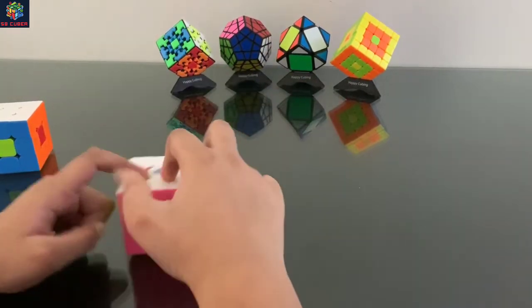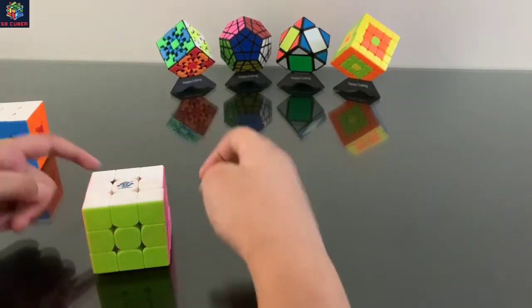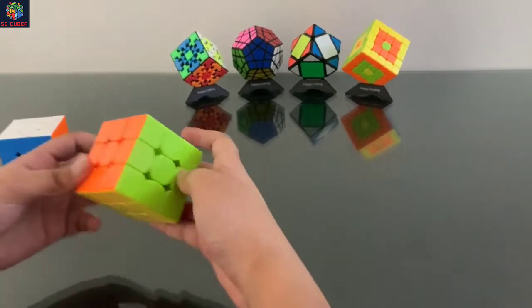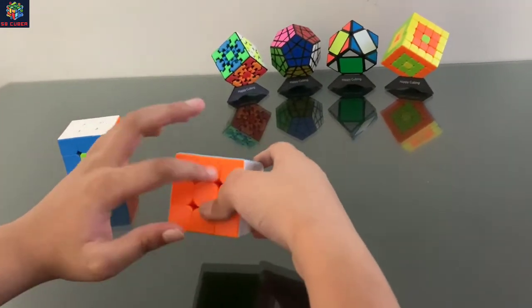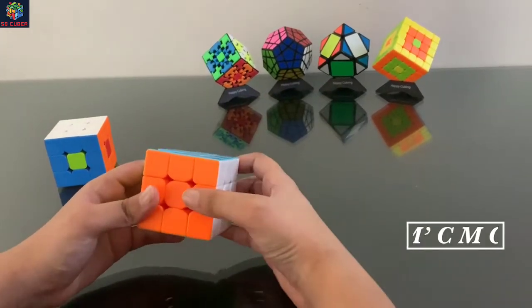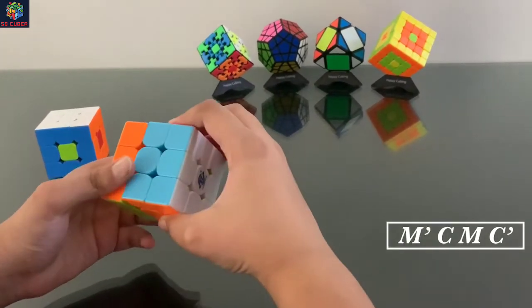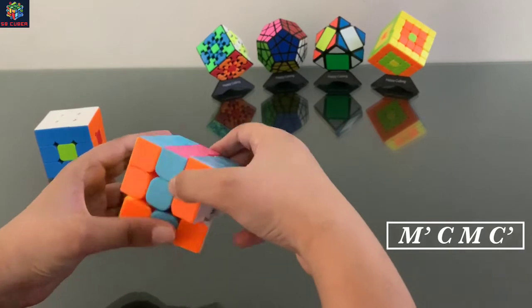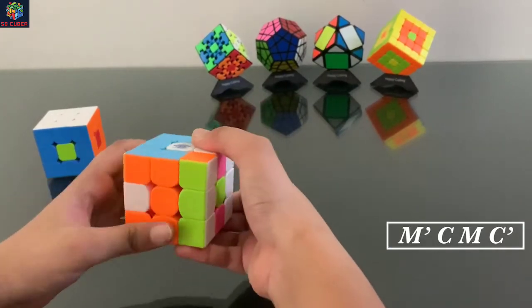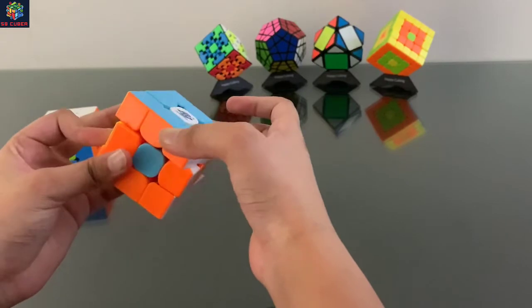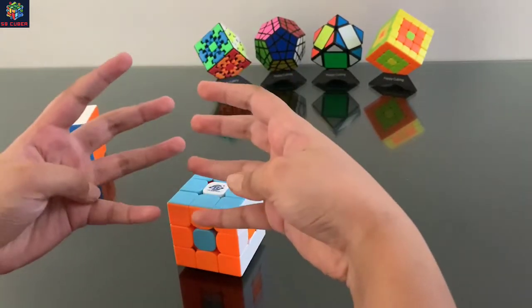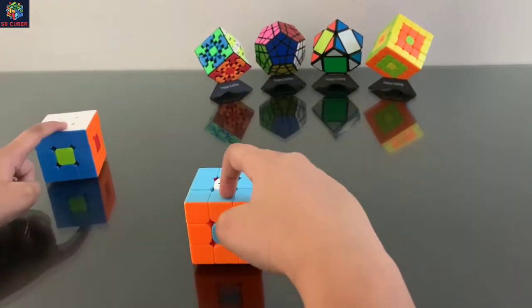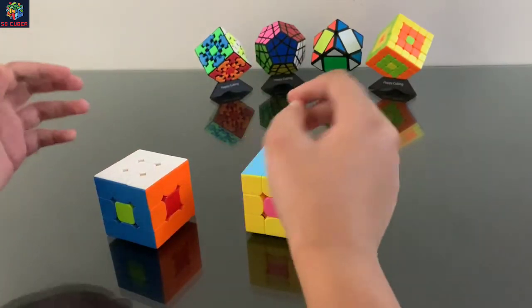Now let's make the donut which has all six dots. For making this we choose any side - I'm choosing orange - and then we follow these simple steps: M dash, C, M, C dash. So you see that was also a simple four moves pattern. These both are really cool.